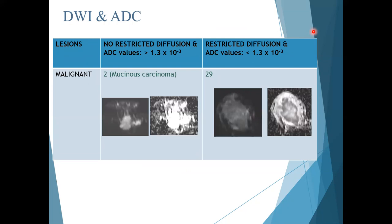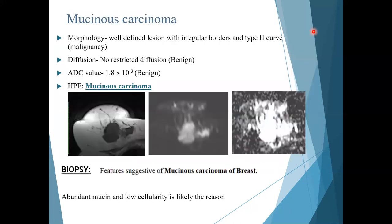29 out of 50 patients had breast lesions showing restricted diffusion with ADC values less than 1.3 × 10⁻³, suggestive of malignant lesions. However, two patients had lesions which morphologically showed malignant features but no restricted diffusion, with ADC values of 1.8 × 10⁻³, suggestive of benign etiology. On histopathology, both patients had mucinous carcinoma. Mucinous carcinoma is therefore a mismatch and can be a false negative in diagnosing malignant lesions, likely due to abundant mucin and low cellularity.